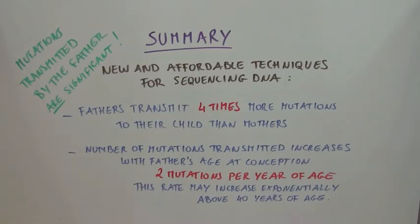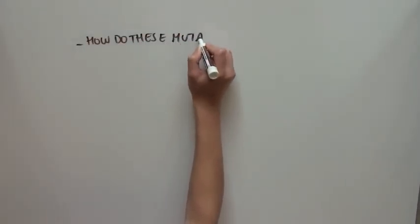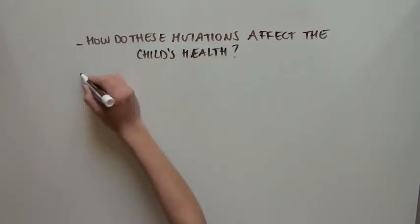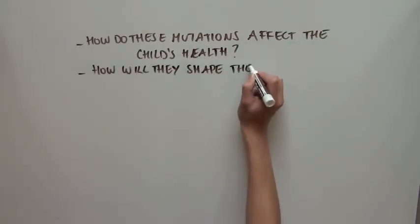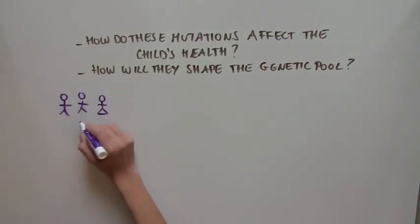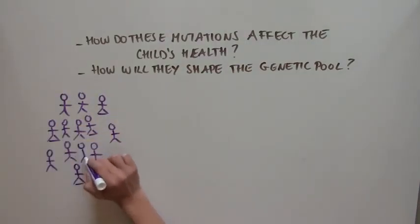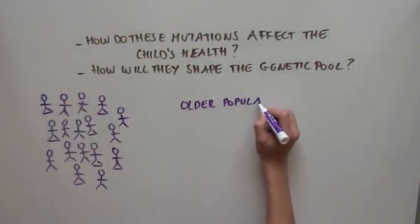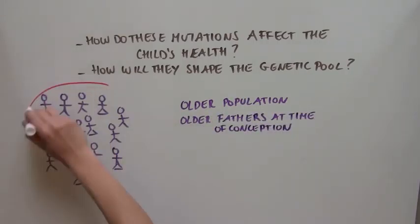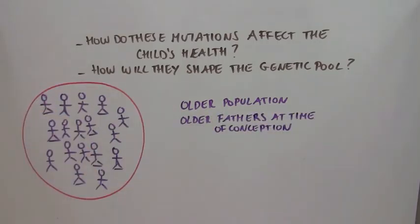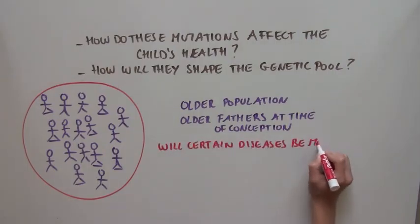It still remains to be seen exactly how these mutations transmitted by the father affect the child's health, and how this might shape the population's genetic pool. As our population ages and men conceive children later in life, it is interesting to think about this study in the context of the population as a whole, to try to predict or anticipate if certain diseases will be more prevalent due to these mutations.